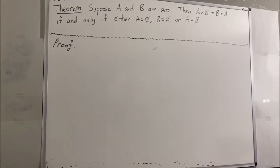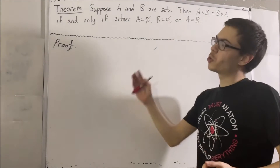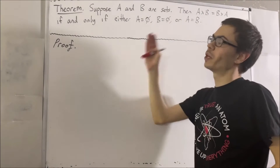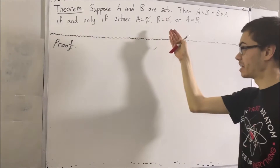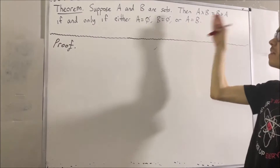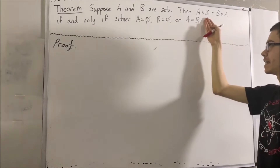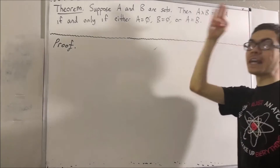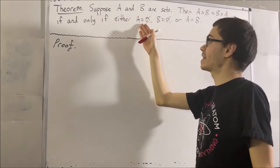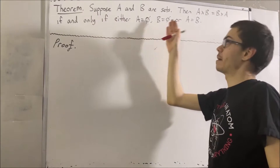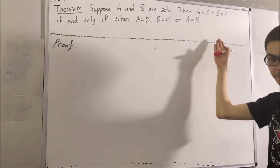Hello! In this video, we are going to prove the following theorem. Suppose A and B are sets. Then, A times B is equal to B times A, if and only if either A is the empty set, B is the empty set, or A is equal to B.